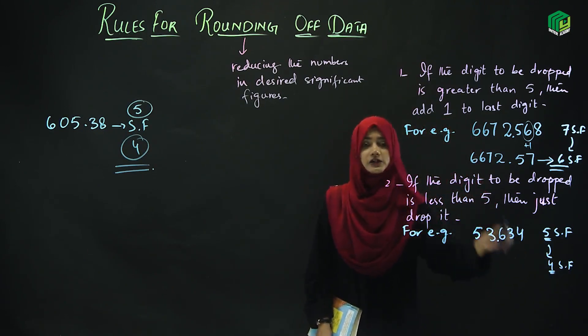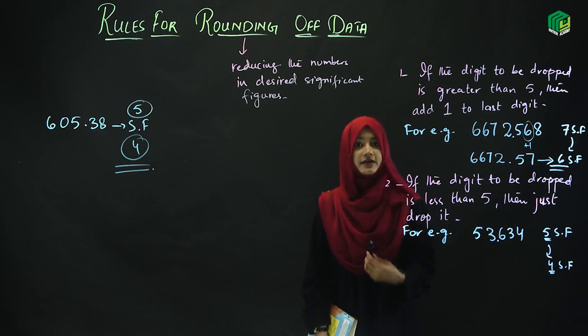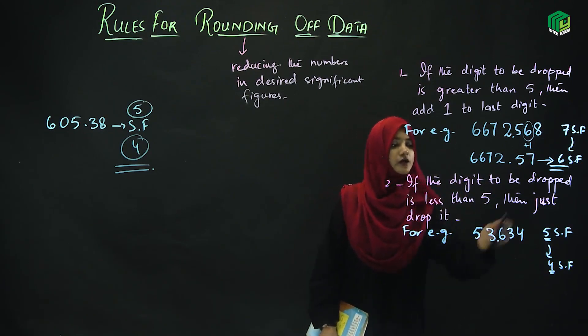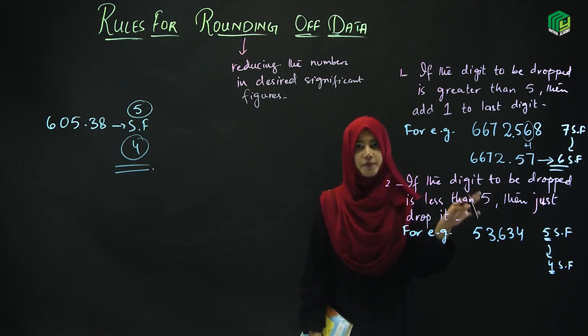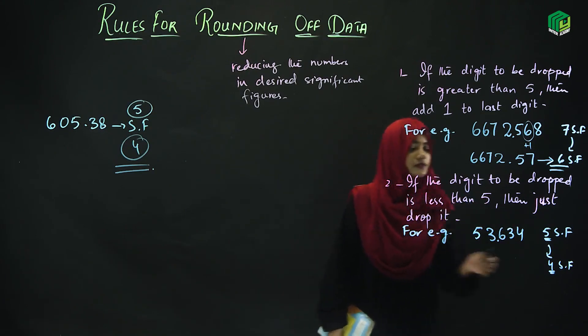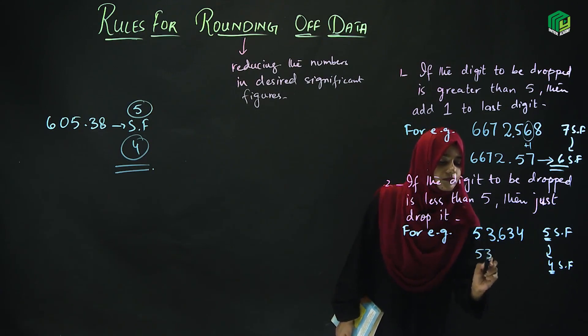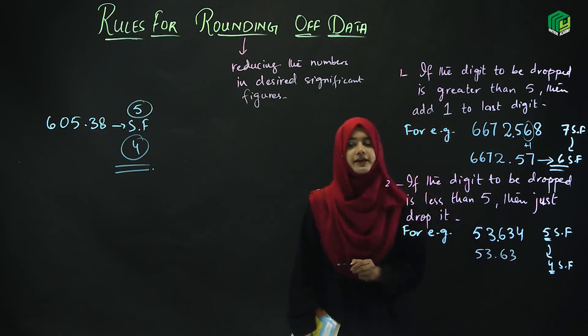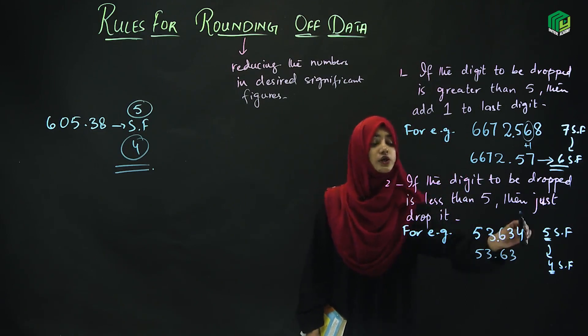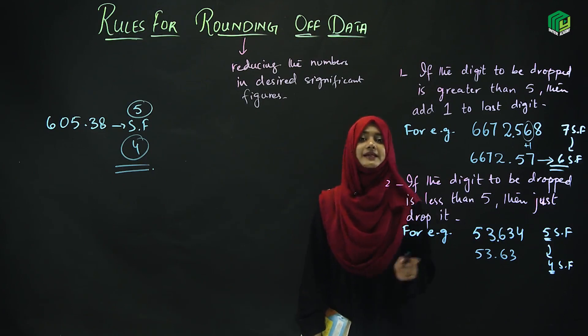If your last digit is less than 5, if the digit to be dropped is less than 5, then you simply drop it. This will remain the same. Whatever we have to drop, if that is less than 5, we just drop it.